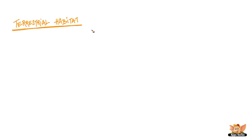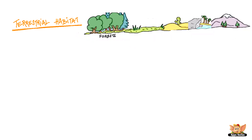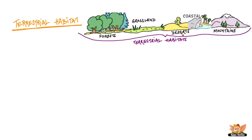Now, let's look at the terrestrial habitat. Forest, grassland, deserts, coastal and mountain regions are some land or terrestrial habitats. Let's look at these terrestrial habitats more closely.